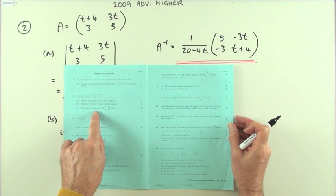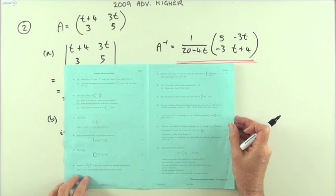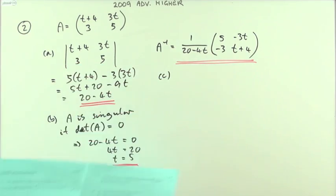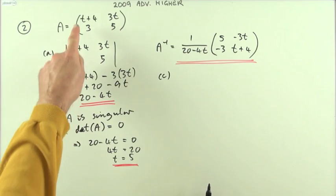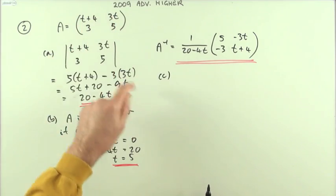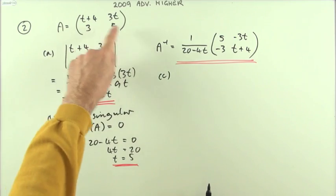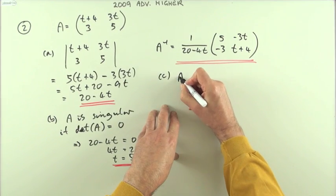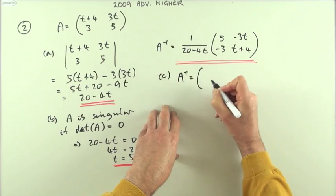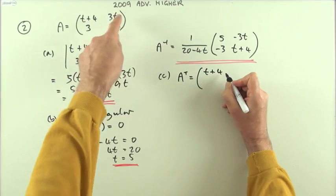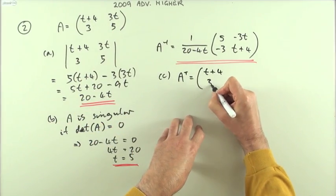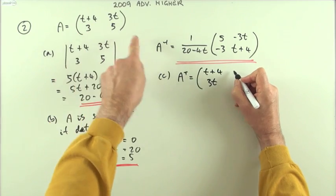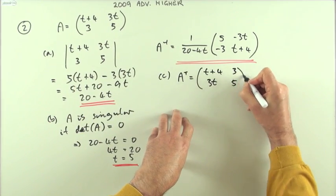Part C: given that the transpose of A is (6, 3; 6, 5), find t. Well, the transpose means to transpose each of the rows into columns. The first row becomes the first column, the second row becomes the second column. So the transpose of A would be: first row t+4, 3t, so first column 3, 4, 3t; second row 3, 5, so second column 3, 5.